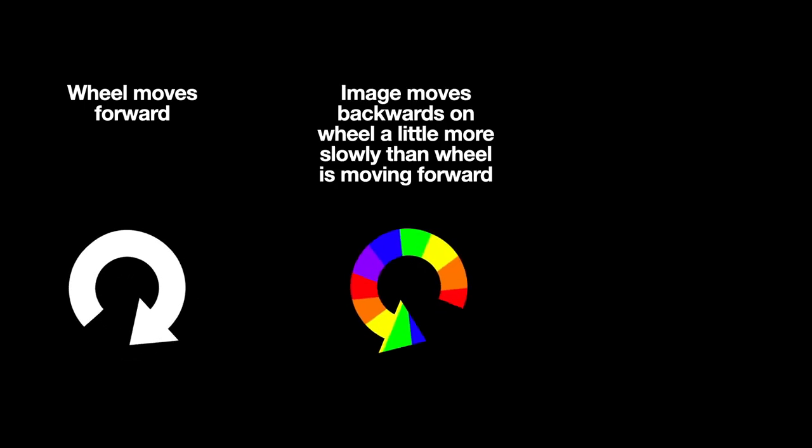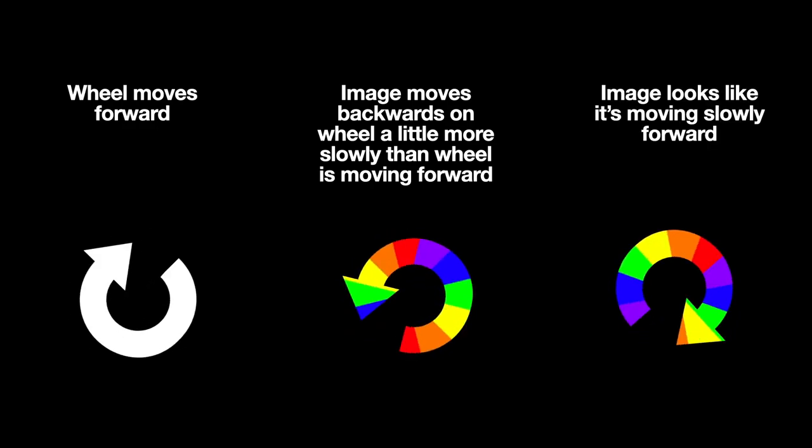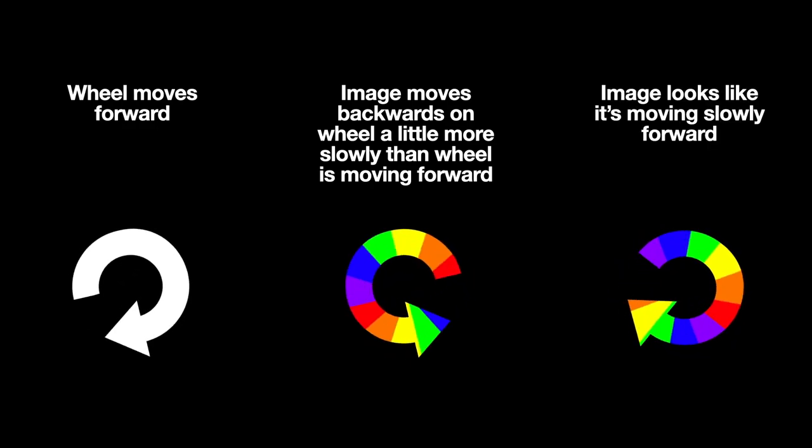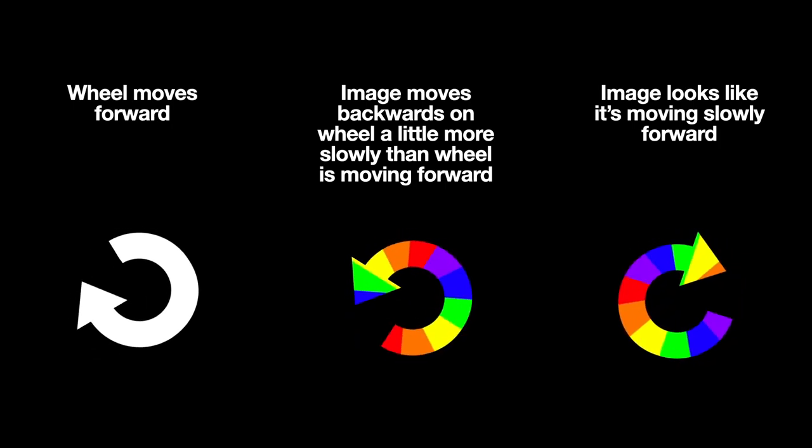So that leads into the big idea for this project. If I know the speed that the wheel is spinning forwards, then I can move the animation backwards at something close to the same speed so that the result is that the visuals are moving forwards slowly. That way I can put lots of different patterns onto the wheels and have them still be clear and visible.